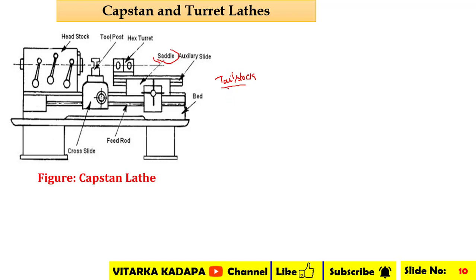In the turret lathe also we will have a similar setup. The most common construction includes two kinds of legs and a tray. There is a head stock, and instead of a tail stock we have a turret — that is the hexagonal turret position.